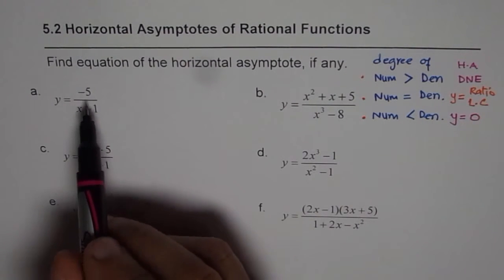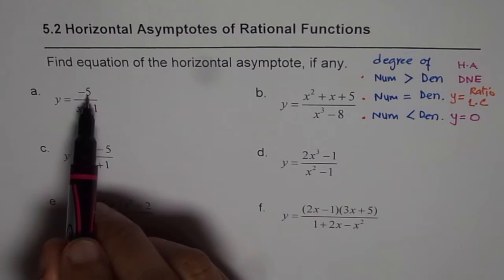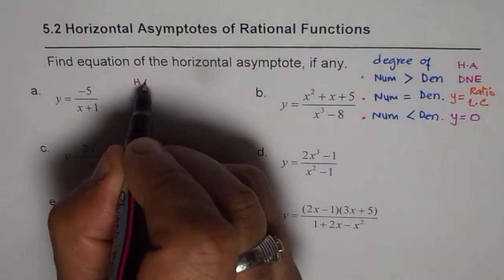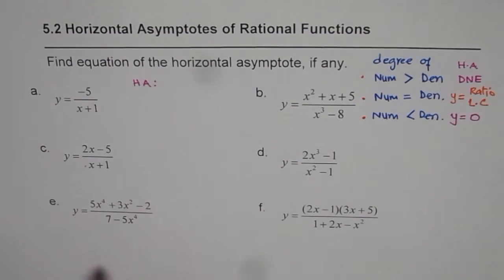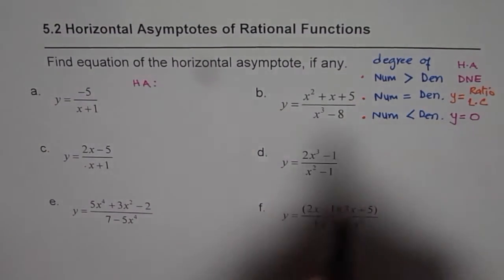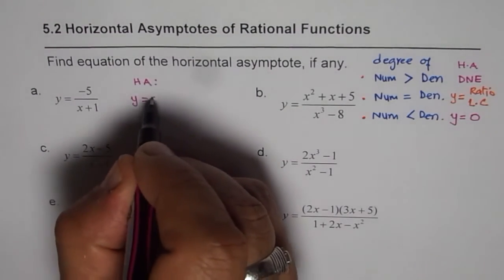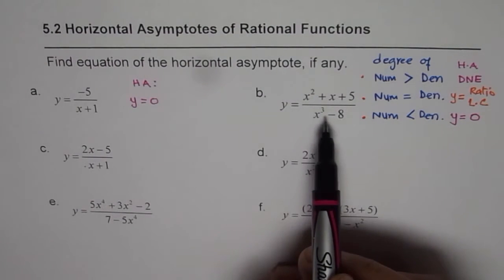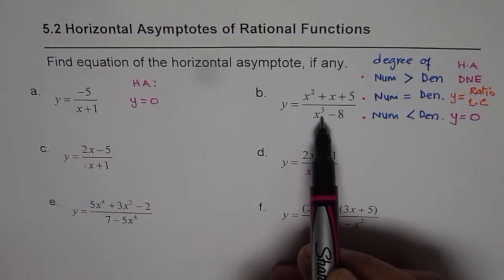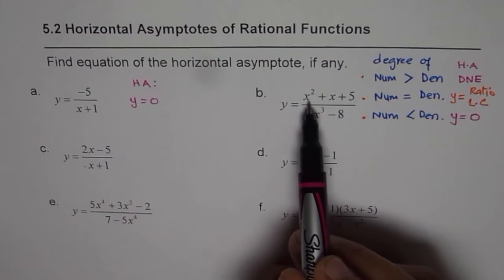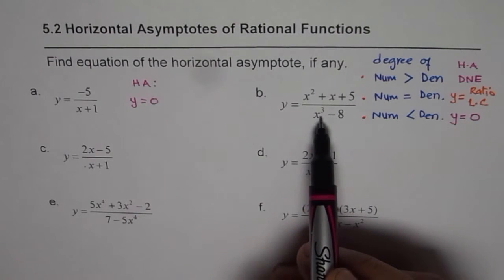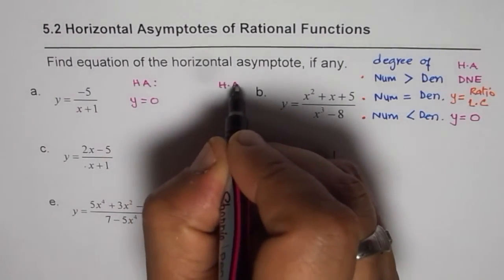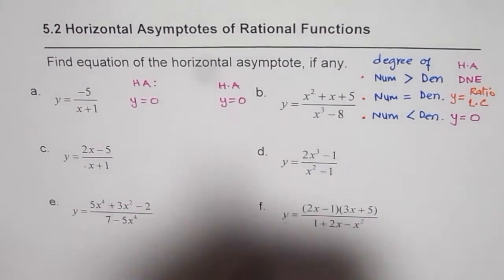For example A, the degree of the numerator is 0 and the degree of the denominator is 1, so the equation of the horizontal asymptote is y equals 0. In example B, the degree of the numerator is 2 and that of the denominator is 3. Since the degree of the numerator is less than the degree of the denominator, the horizontal asymptote is again y equals 0.